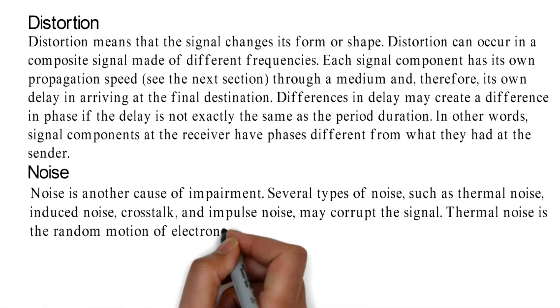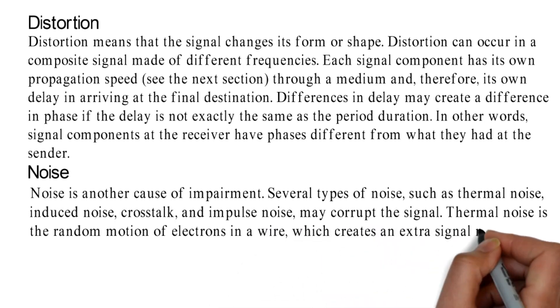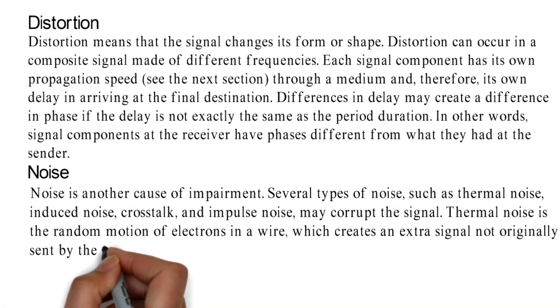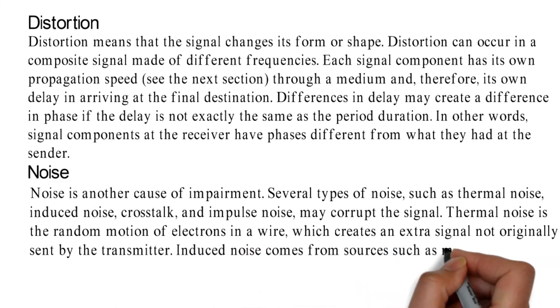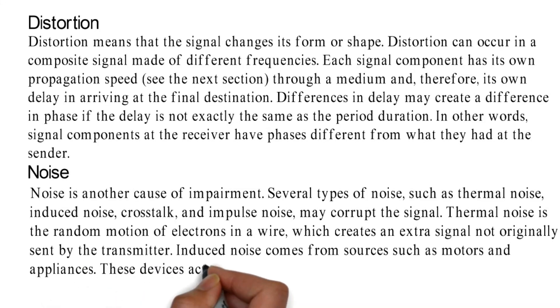Thermal noise is the random motion of electrons in a wire, which creates an extra signal not originally sent by the transmitter.